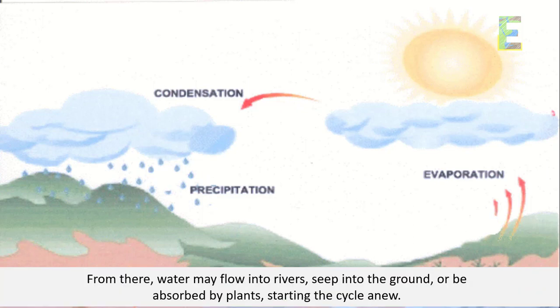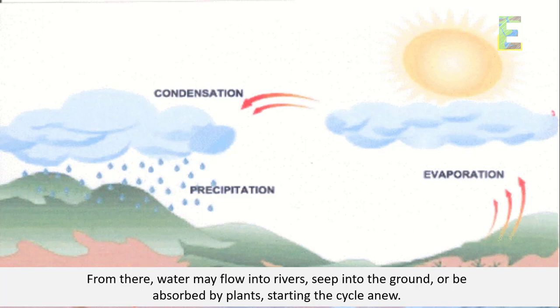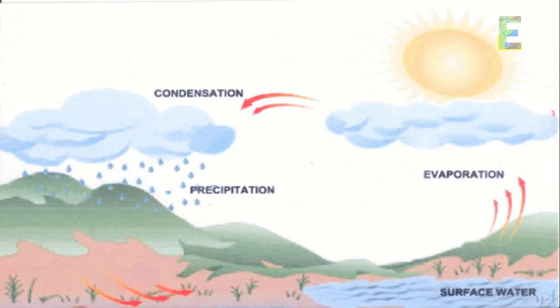From there, water may flow into rivers, seep into the ground, or be absorbed by plants, starting the cycle anew.